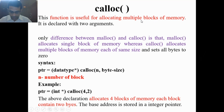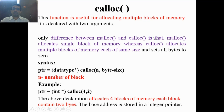Welcome to the video lecture on the calloc() function. This function is useful for allocating multiple blocks of memory. It is declared with two arguments: the first argument is for the number of blocks, and the second argument stands for the size of the block. The only difference between malloc() and calloc() is that malloc() allocates a single block of memory, whereas calloc() allocates multiple blocks of memory.